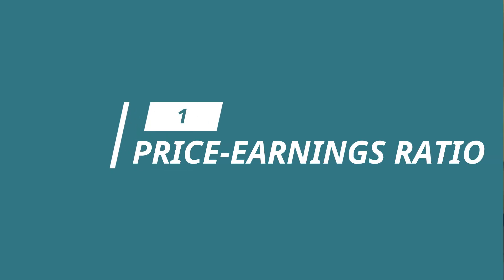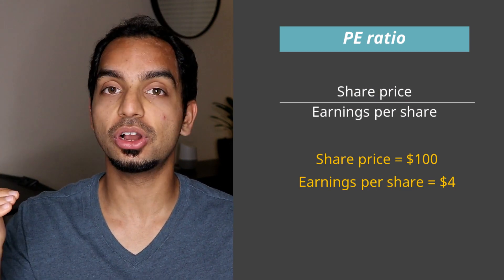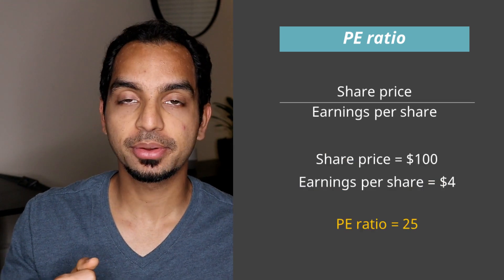Let's start with the first metric, which is the PE ratio or the price to earnings ratio. This is what I use as a first step to analyzing any stock, and it's probably the most popular valuation metric out there. It is the ratio of a company's share price to its earnings per share. The earnings per share is a company's profits on a per share basis. So if a company is trading at a hundred dollars and has an earnings per share of $4, then its PE ratio is 25. Essentially what the PE ratio is telling you is how much investors are willing to pay per dollar of the company's earnings — in this case, 25 times earnings.